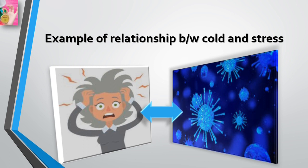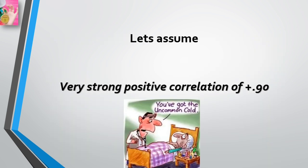Given the basics of correlation coefficients, let's return to our example of investigating the relationship between stress and colds. Let's assume we found a strong positive correlation of +0.90 between the number of stressful events people experienced and the number of colds they had. People who experienced a high number of stressful events had a higher number of colds than did people who experienced a lower number of stressful events.